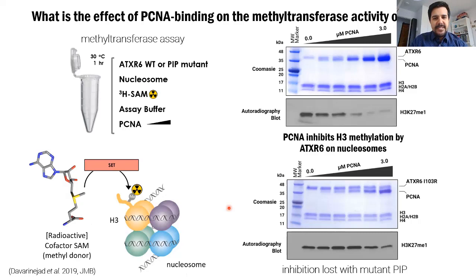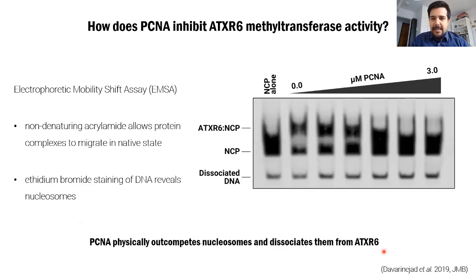We next asked whether PCNA can modulate the activity of ATXR6. To investigate that, we set up a methyltransferase assay using a radioactive methyl donor and cofactor so that we can visualize histone methylation on film. Looking at the levels of H3 monomethylation on lysine 27, we see that with increasing amounts of PCNA, the histone methylation levels decrease and diminish. However, using a PIP motif mutant ATXR6 which is unable to bind PCNA, this inhibitory effect was lost.